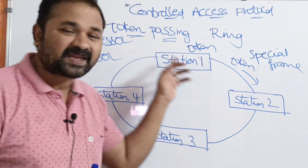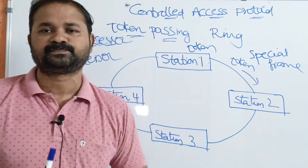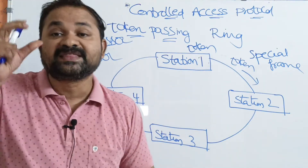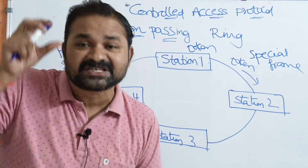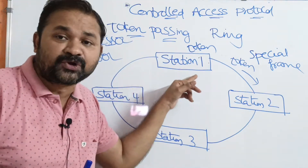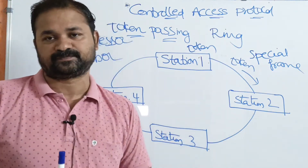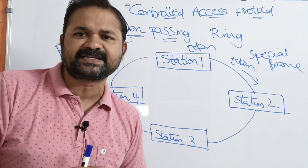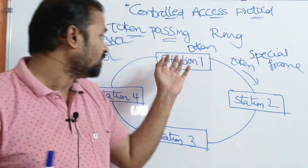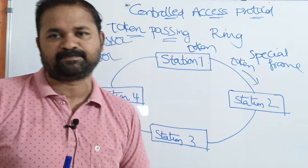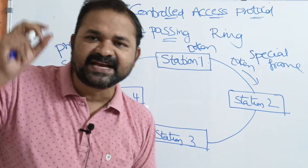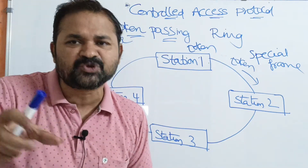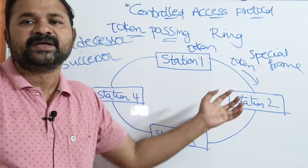Let station 1 has some data to send, but it has no token. In that occasion, station 1 has to wait until it receives the token from its predecessor, that is station 4. After station 4 sends the data, it will pass the token to its successor, station 1. So now station 1 can send the data. That means if a station has data but no token, it has to wait until it receives the token from its predecessor station.